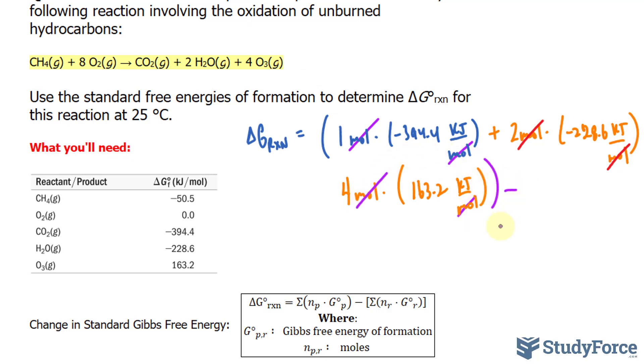We subtract the sum of the reactants. First is CH4: one mole times negative 50.5. I'll ignore the units now since we know what's happening. Plus 8 times O2, which has a delta G of 0.